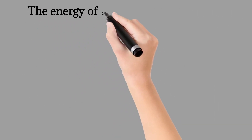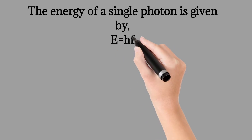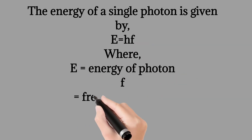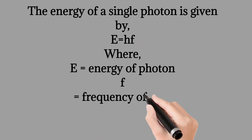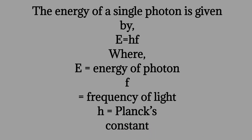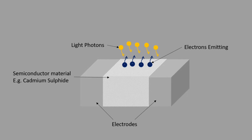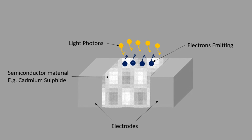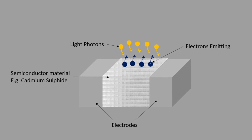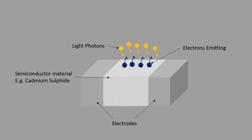The energy of a single photon is given by: E = hf, where E equals the energy of the photon, f equals the frequency of light, and h equals Planck's constant. When a photon strikes on the material surface, part of its energy is used to release an electron from the material surface and the remaining energy is used to impart kinetic energy to the electron.